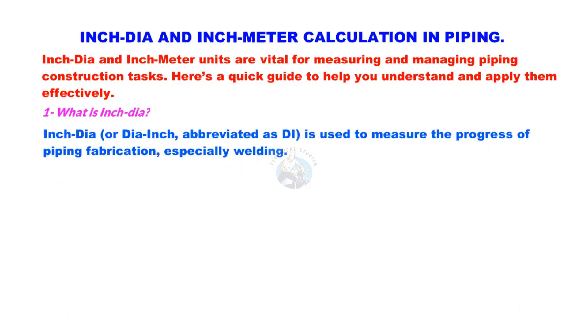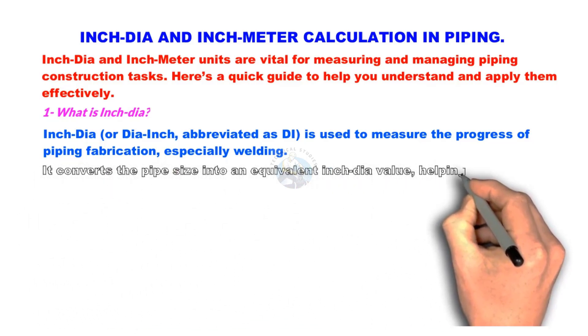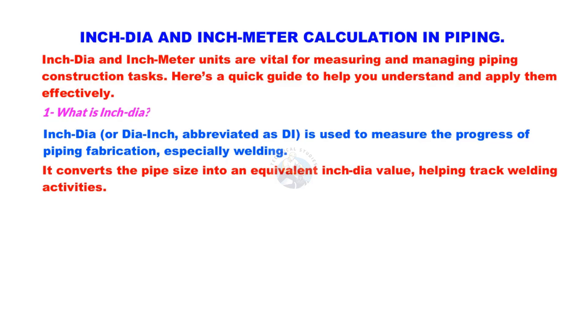Inch-dia or dia-inch, abbreviated as DI, is used to measure the progress of piping fabrication, especially welding. It converts the pipe size into an equivalent inch-dia value, helping track welding activities.